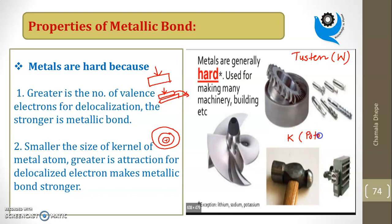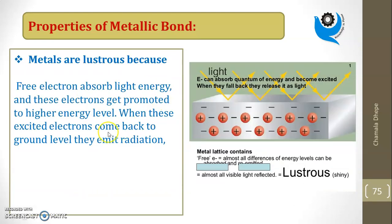This is the first property - metals are hard. Why are metals hard? Because there is a strong attraction between the delocalized electron and the positively charged metal ion core.